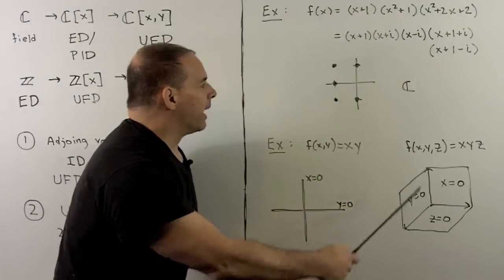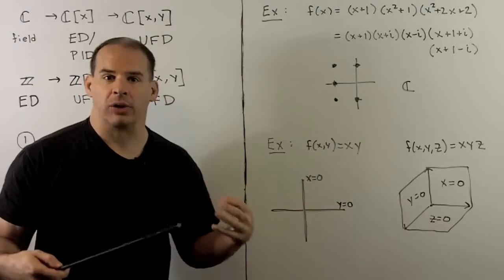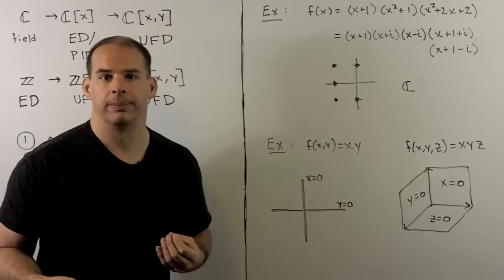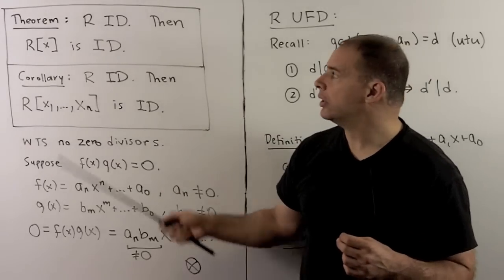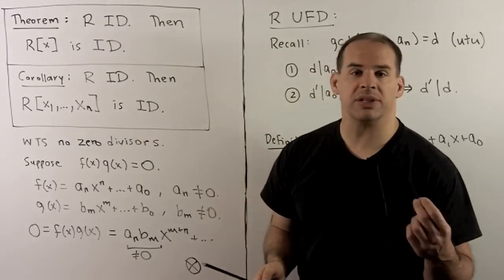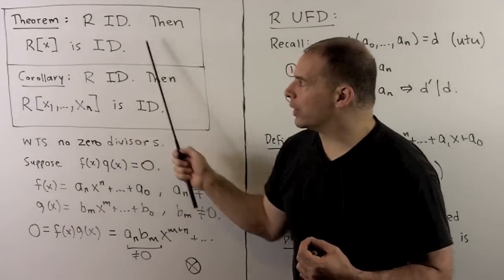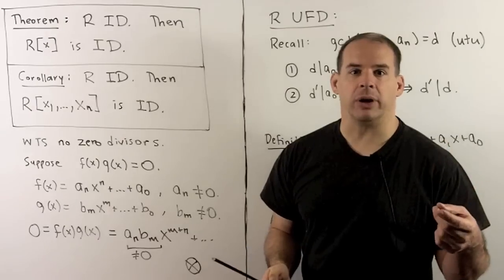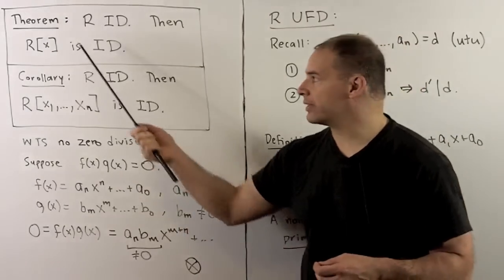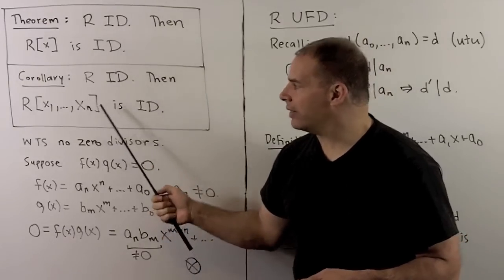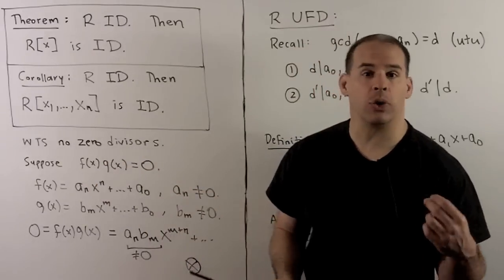We're not going to say much more about this — it's leading into algebraic geometry — but this is what you want to keep in mind when factoring polynomials: there are always pictures that go with them. First, we show the integral domain property. If R is an integral domain, then R[x] is also an integral domain. Once we have that, I just keep reapplying the theorem, so I can adjoin as many variables as I'd like. That gives a corollary: if R is an integral domain, then polynomials in x₁ through xₙ over R also form an integral domain.